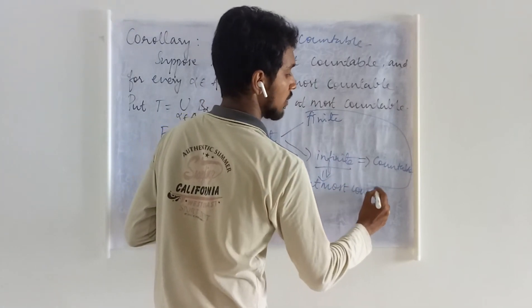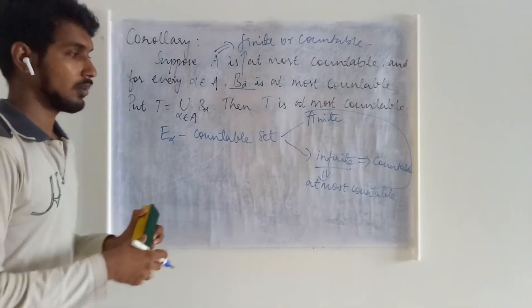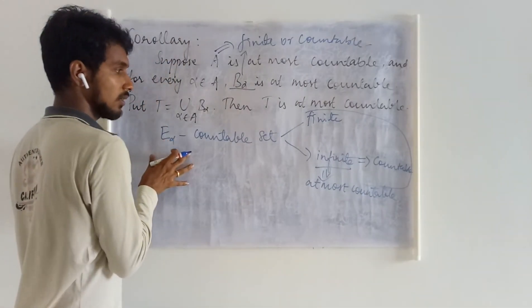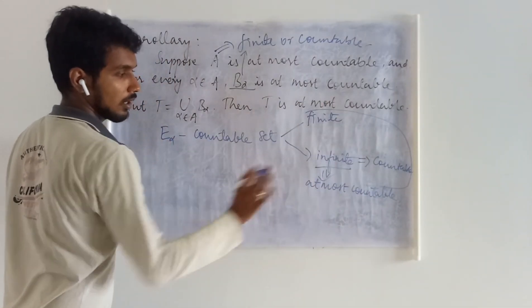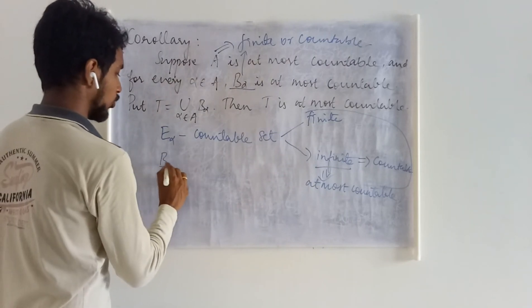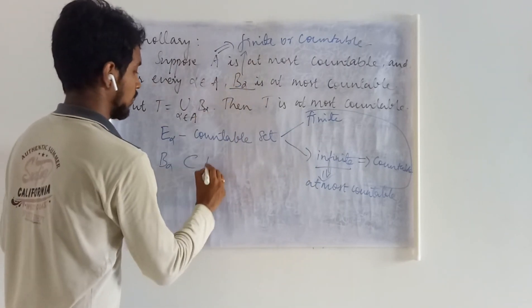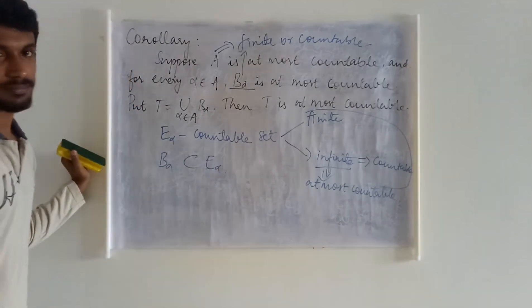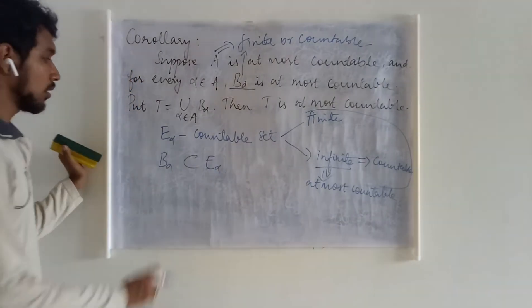Either it will be finite or countable; it cannot be uncountable. So you can consider this thing to be an at most countable set. Therefore, you may treat your B_alphas to be a subset of E_alpha.